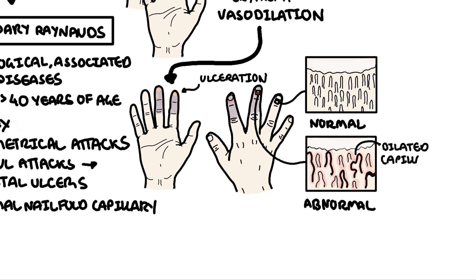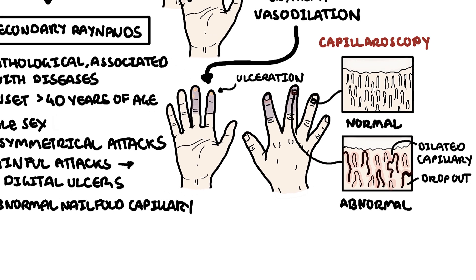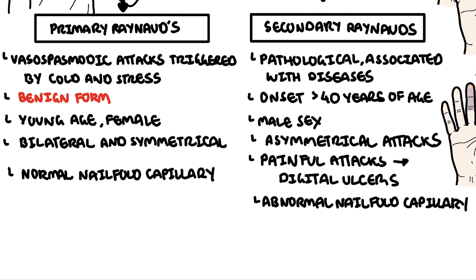Here you can see dilated disorganized capillary loops with some associated dropouts, so dropout of the actual capillaries. Again, these changes are seen using capillaroscopy, by looking underneath the nail bed in someone who has Raynaud's phenomenon.